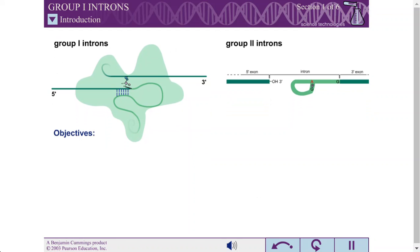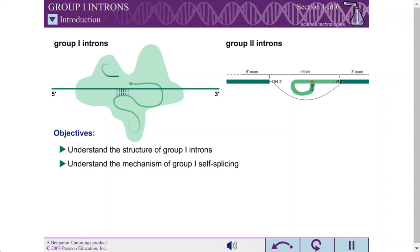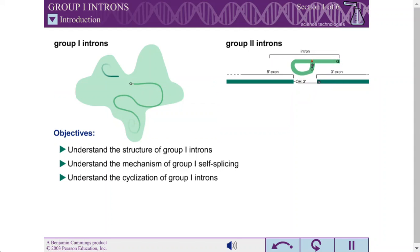When you have completed this exercise, you should understand the structure of Group 1 introns, understand the mechanism of self-splicing by Group 1 introns, and understand how Group 1 introns use cyclization to prevent themselves from participating in the reverse reaction.